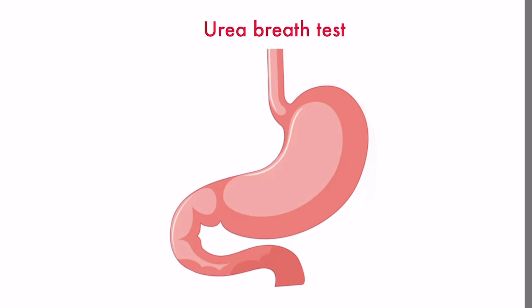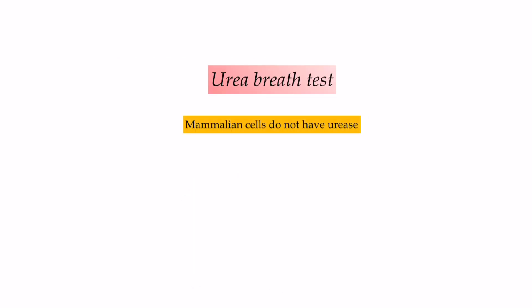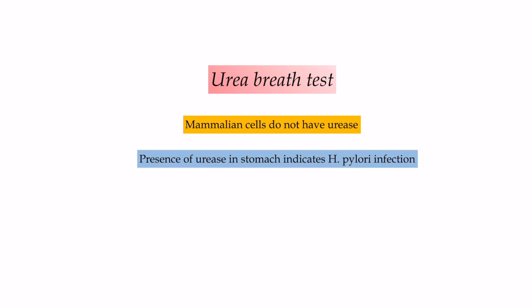In the urea breath test, urea is radiolabeled with carbon and ingested. Urease enzyme breaks this urea into ammonia and carbon dioxide. This CO2, carrying radiolabeled carbon, is absorbed into the bloodstream and removed by the lungs, where it can be detected in breath. Mammalian cells do not have urease enzyme, so if any urease enzyme is present in the stomach, it must be Helicobacter pylori, as other urease-producing bacteria are not able to survive in the stomach.